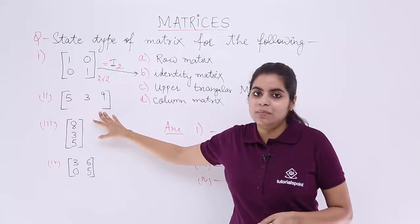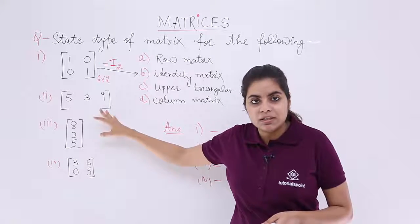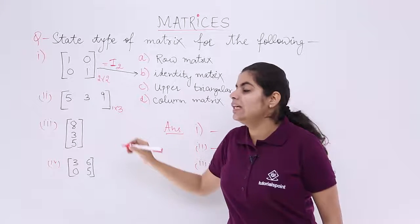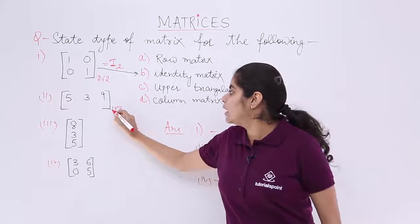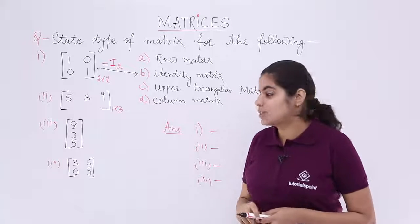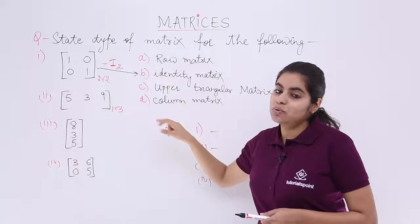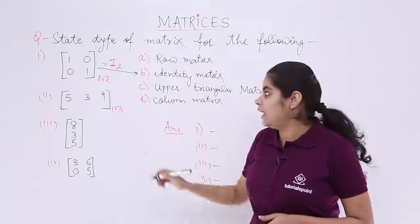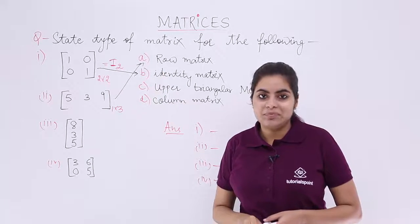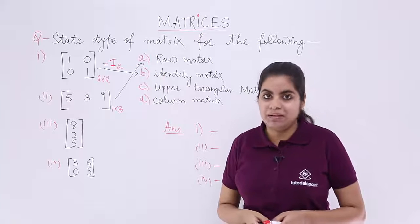So, this example of part number 2 which is one row and three columns. So, the order is 1 by 3 is an example of what? It is an example of row matrix. Let's see which option is row matrix. Row matrix out of these four options is option number A. So, we basically join this to option number A.